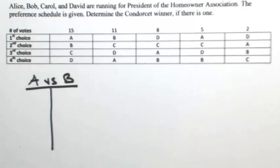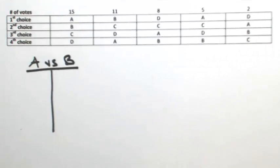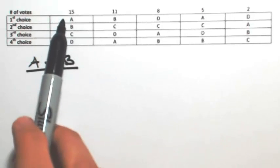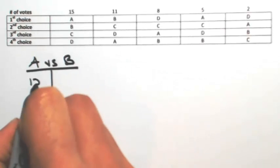And go through each column and determine which candidate was more preferred, A or B. So in the first set of voters, A is over B, so A is more preferred, so A gets those 15 votes.